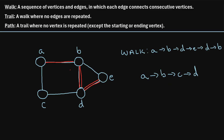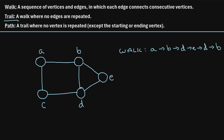So a walk is pretty straightforward — you're just moving from one vertex to the next using edges, and you're allowed to visit every edge as many times as you want, and every vertex as many times as you want. Now let's consider what is a trail. A trail is just a walk where no edges are repeated.